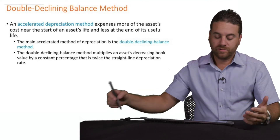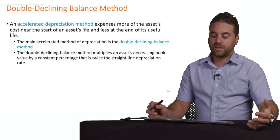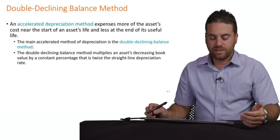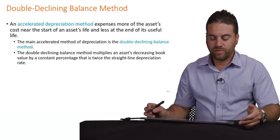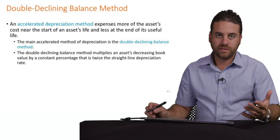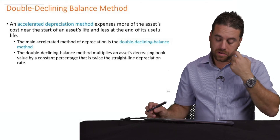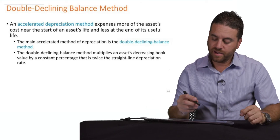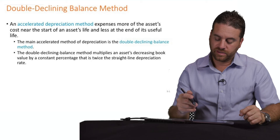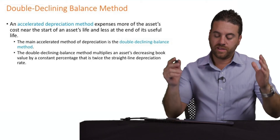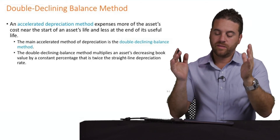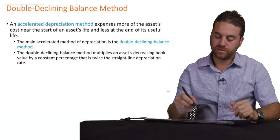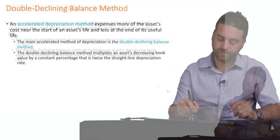We'll go back to the same example. We have a truck, it's $41,000, it has a residual value of $1,000, and the useful life is five years. Let's see how double declining works and how we get a higher amount the first year and then lower and lower year after year.